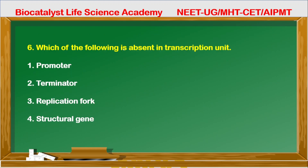Question 6: Which of the following is absent in a transcription unit — that is, where RNA is made using DNA as a template? Promoter is present — it is the site where RNA polymerase binds. Terminator sequence is also present for transcription termination. Replication fork is used for DNA replication and has no role in transcription. Structural gene is also present in a transcription unit. So what is absent is the replication fork — option third.